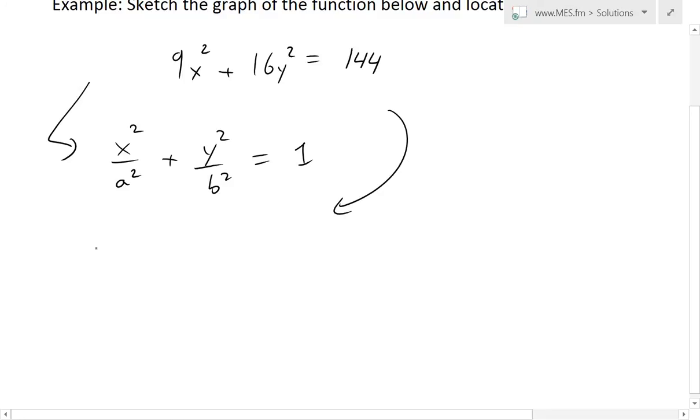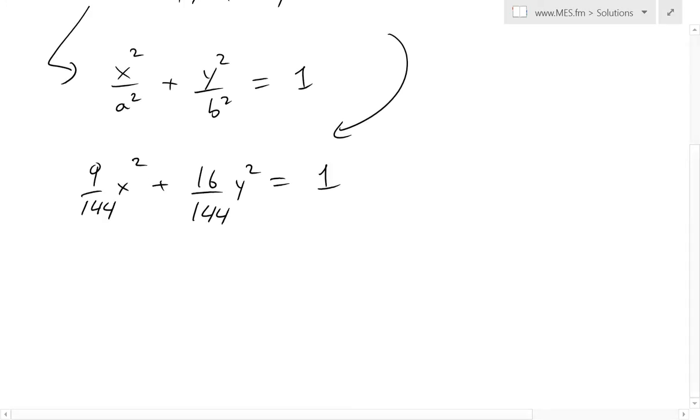So we'll put this down here, so 9 divided by 144, and we do this so we get the 1 on the right side. Now we'll have 9 over 144 x squared plus 16 over 144 y squared equals 1, so 144 divided by itself is just 1.